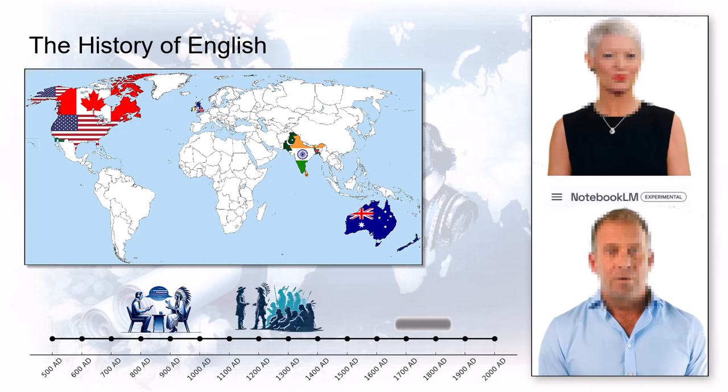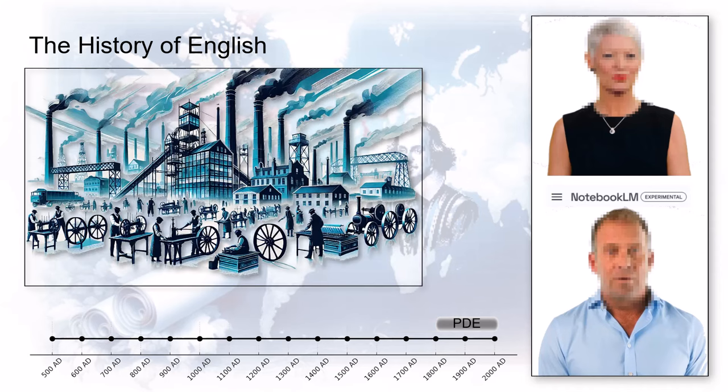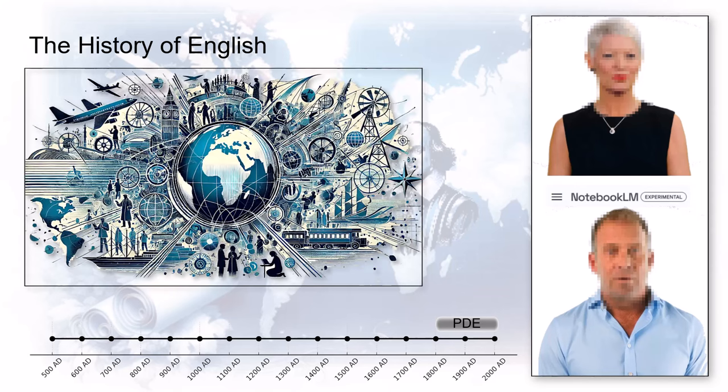That same process — language bumping up against language — wasn't limited to the colonies. Back in England, the Industrial Revolution was happening, and a whole new vocabulary was needed. Every time humans change how they live, language has to scramble to keep up. Suddenly you need words for steam engine, factory, electricity. Sometimes borrowed, sometimes old words repurposed, sometimes brand new — like language went through its own industrial revolution, mass production but for words.